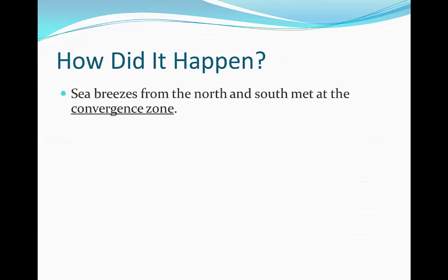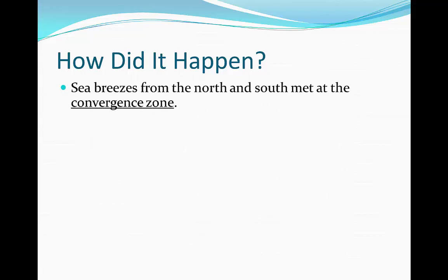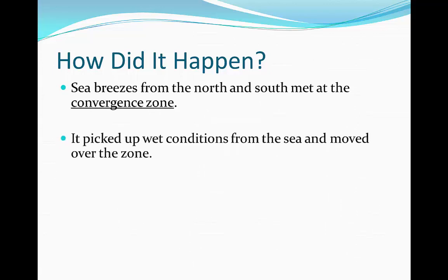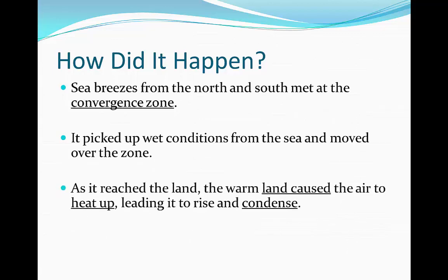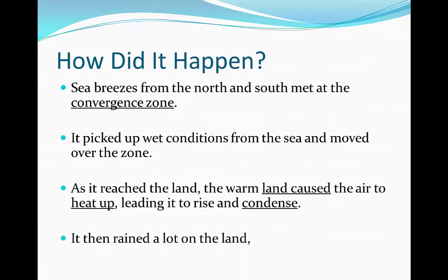How did this happen? Sea breezes from the north and the south met in a convergence zone — a place where the wet conditions from the sea moved over the zone. As it reached the land, all these wet conditions were then warmed by the land. As a result, the air heated up these conditions, making all of the air and sea breezes that came over rise and condense into clouds. It then rained a lot onto the land.